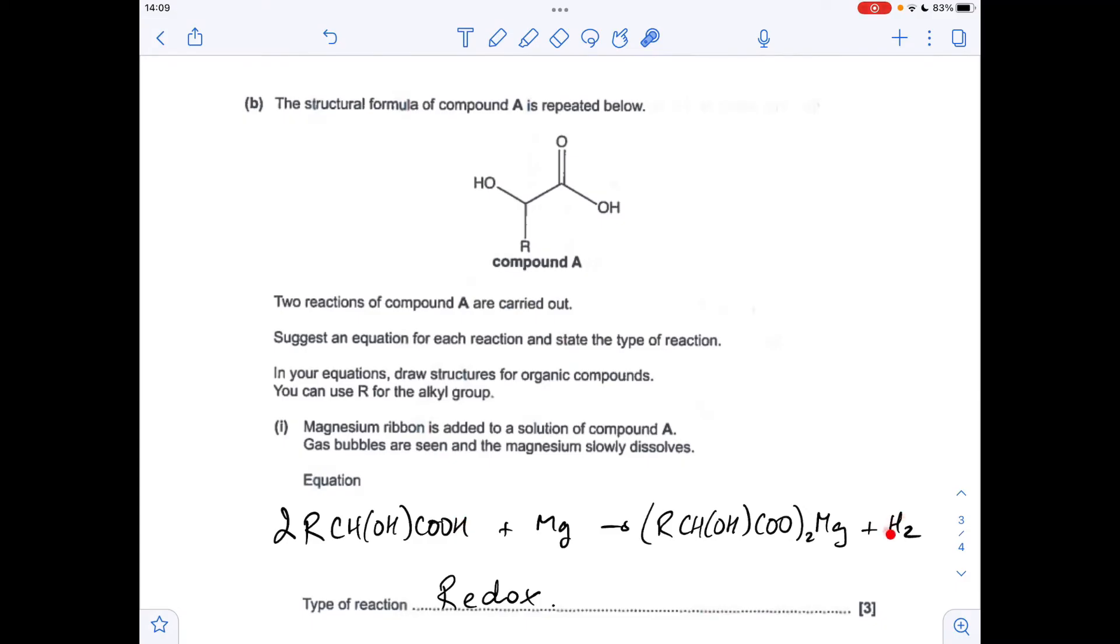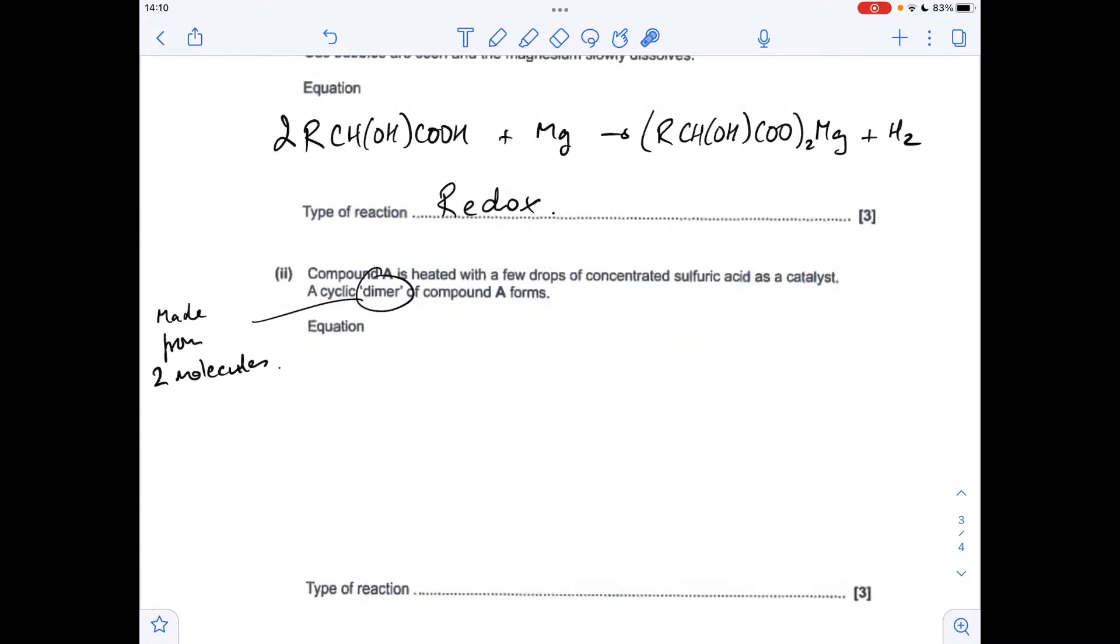Next reaction is a little bit more complicated. Compound A heated with a few drops of concentrated sulfuric acid as a catalyst, and we get this cyclic dimer that's formed. So the word dimer means it's made from two molecules. So we just think polymer, they're made from many monomers, many molecules. So a dimer is made from two molecules. So what must be happening here is two moles of compound A reacting together and forming this cyclic dimer.